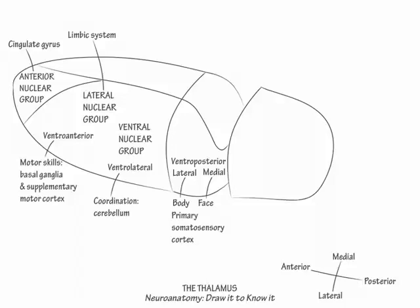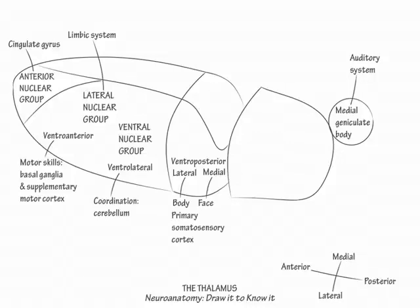Now draw the medial geniculate body and show that it is a part of the auditory system. It receives auditory information from the inferior colliculus and projects to the transverse gyri of Heschl in the insular cortex.